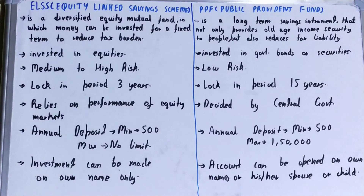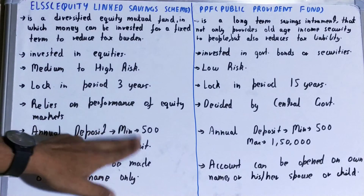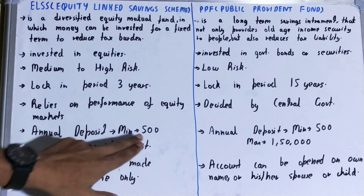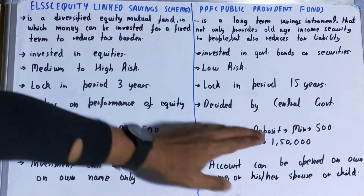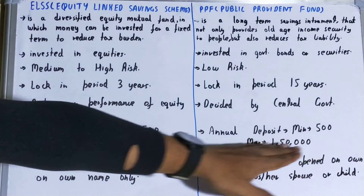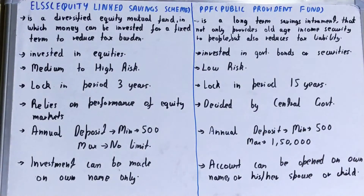Next, if you talk about the annual deposits — for ELSS the minimum deposit is 500 and there is no maximum limit; you can invest as much as you want annually. But for PPF, the minimum is 500 and the maximum is 1.5 lakh.